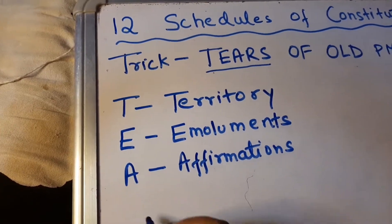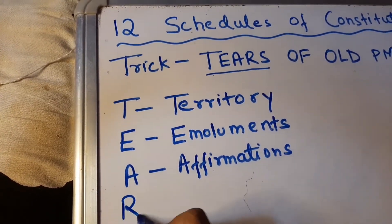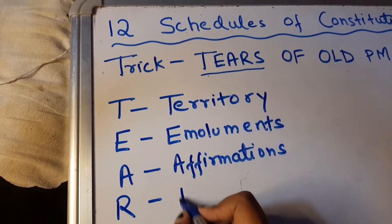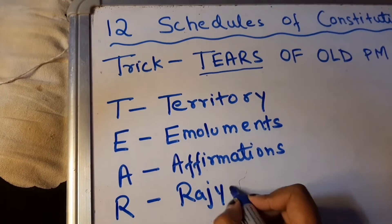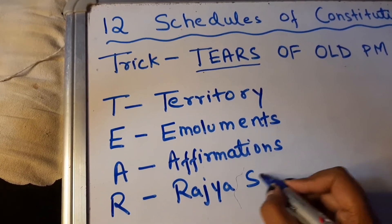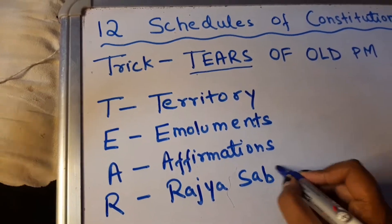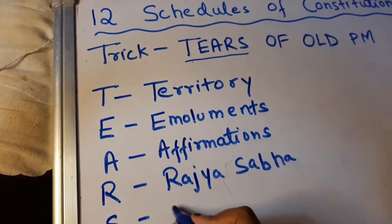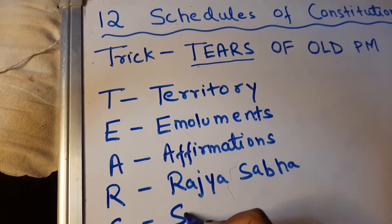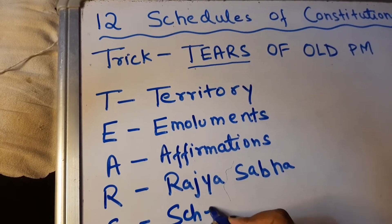With R we get Rajya Sabha, which is Schedule 4. With S we see Scheduled Area, which corresponds to Schedule 5.